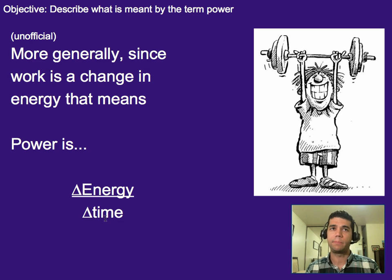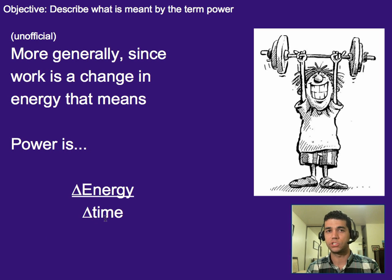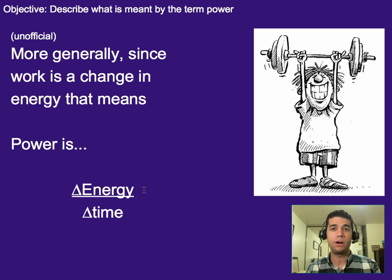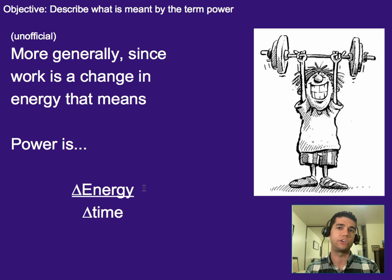Another way to think about it — and this is an unofficial way — is since work is a change in energy, that would mean power is the change in energy per time. If it's work per time, and work is change in energy, then that's the same thing. This is probably a much better way to think about power. However, it's not the official way to define it, so please don't write that on tests. But especially if you go into IB, begin thinking about power as change in energy over time, and think about work as a change in energy — that will help you in a lot of different problems.